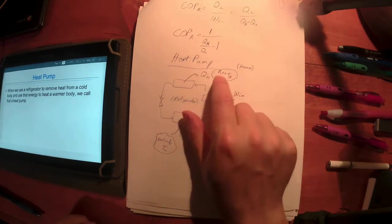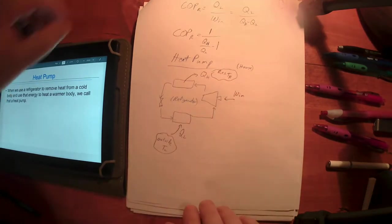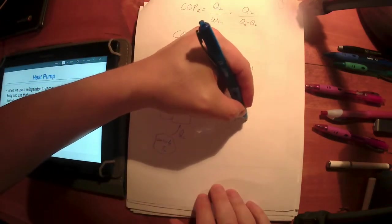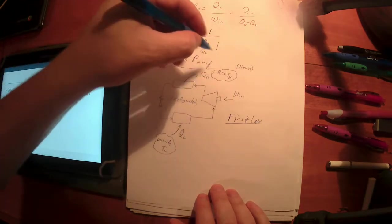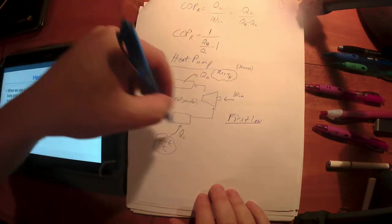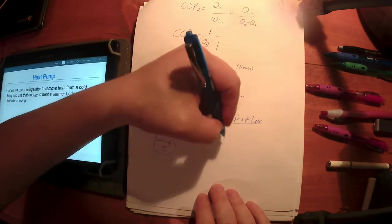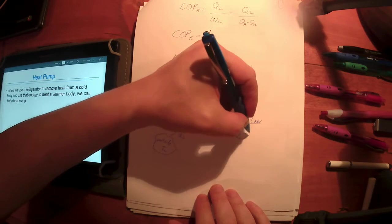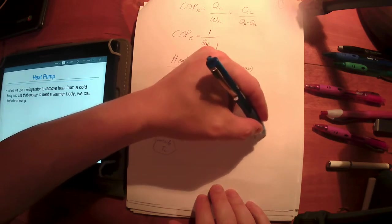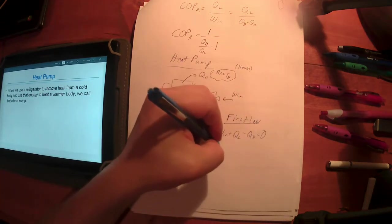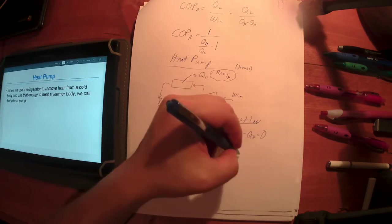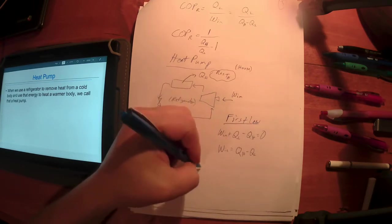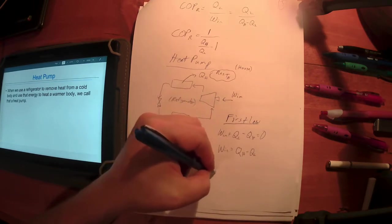The first law for this thing, just like for the refrigerator, you add your in and subtract your out. Because it's a cycle, the change is zero. So work in plus QL minus QH equals zero. Just like with a refrigerator, the work in is essentially equal to the net heat out.